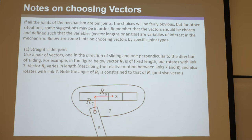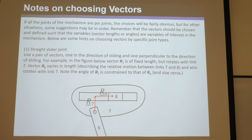There are some rules of thumb and tricks. If all the joints of a mechanism are pin joints, the choices are fairly obvious — you just connect the pins. Pin joints are the most obvious; you're always going to point to a pin or from a pin. For other situations, remember that the vectors should be chosen so the variables — the lengths and angles — are variables of interest in the mechanism. Make sure you actually care about the unknowns that you want to solve.